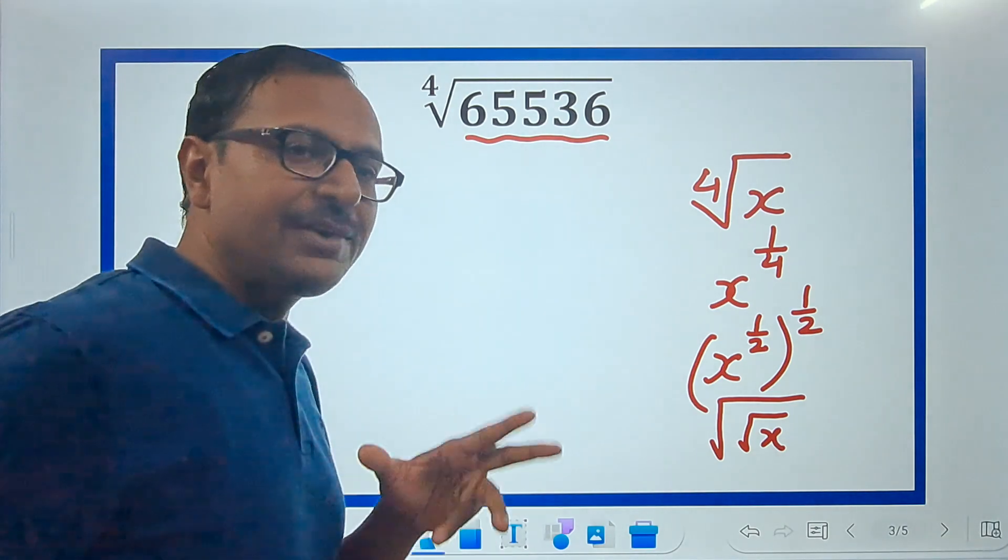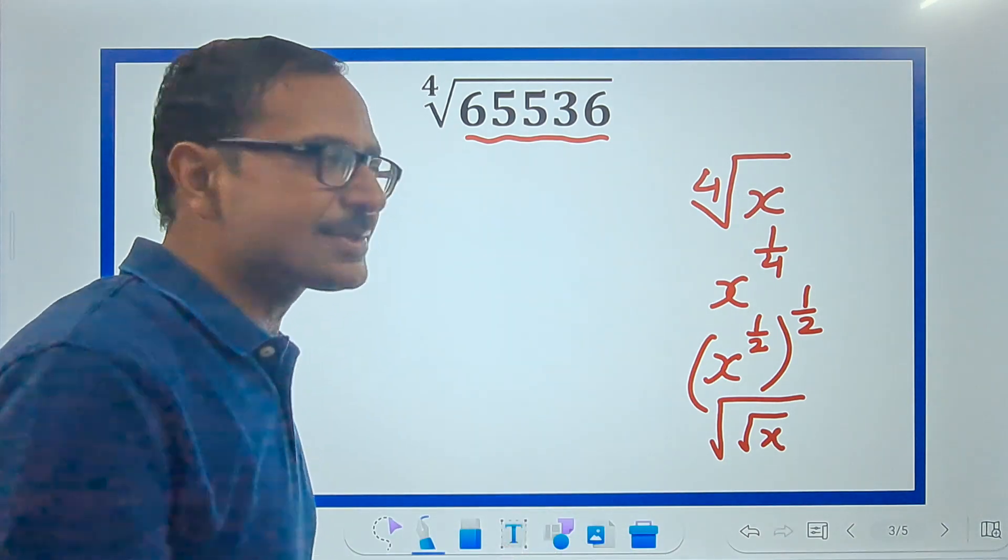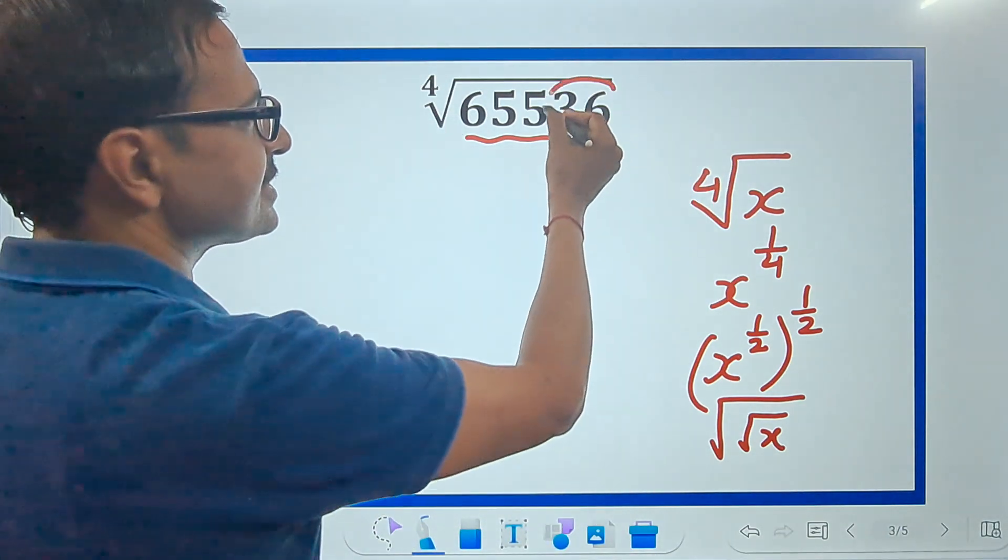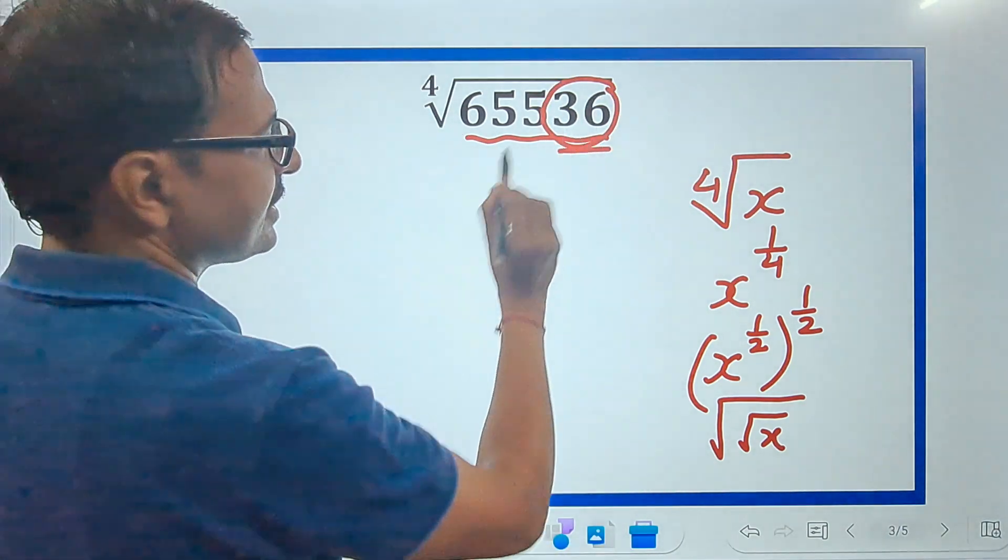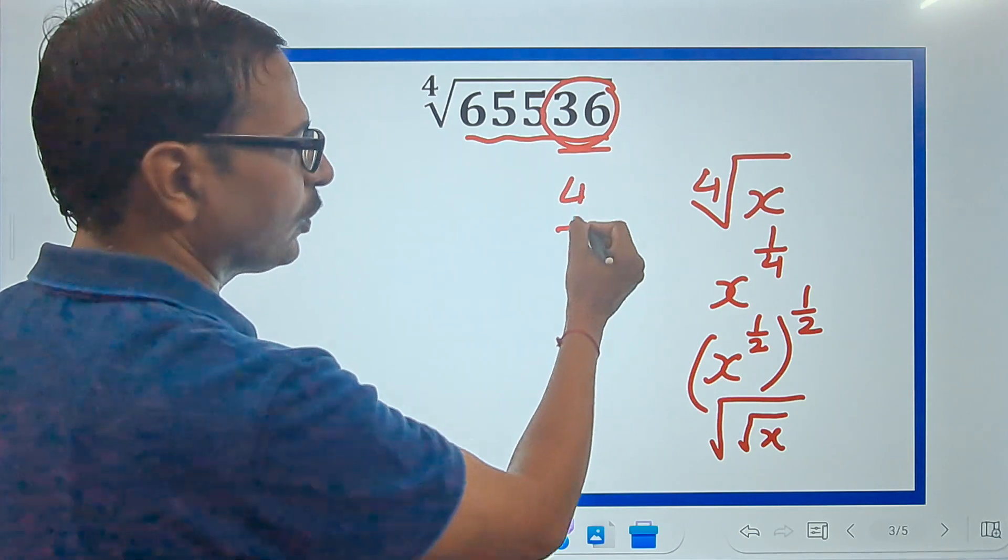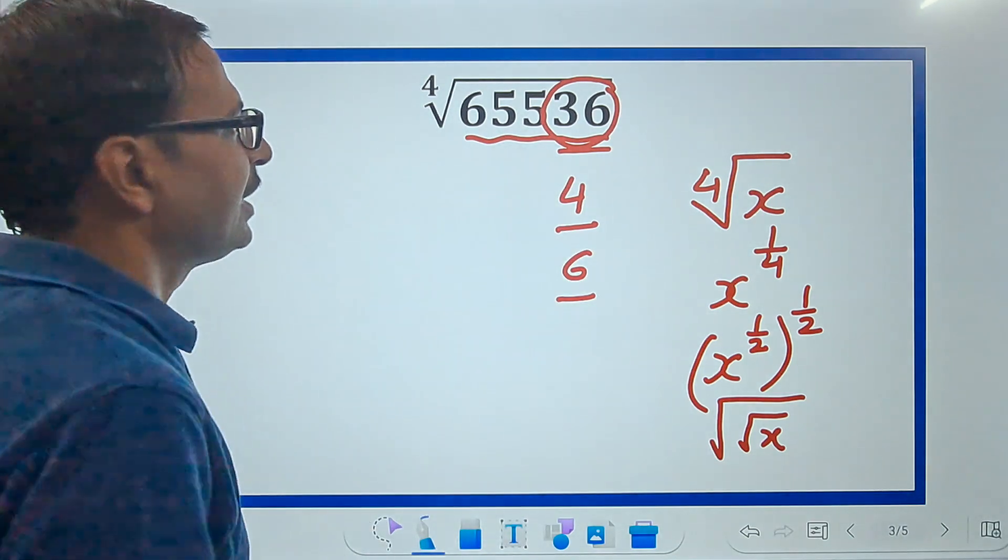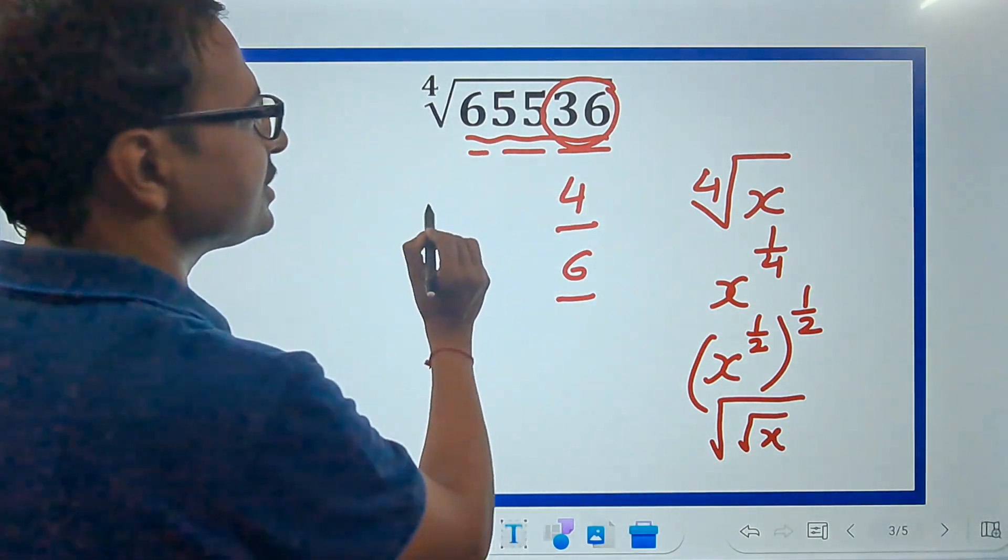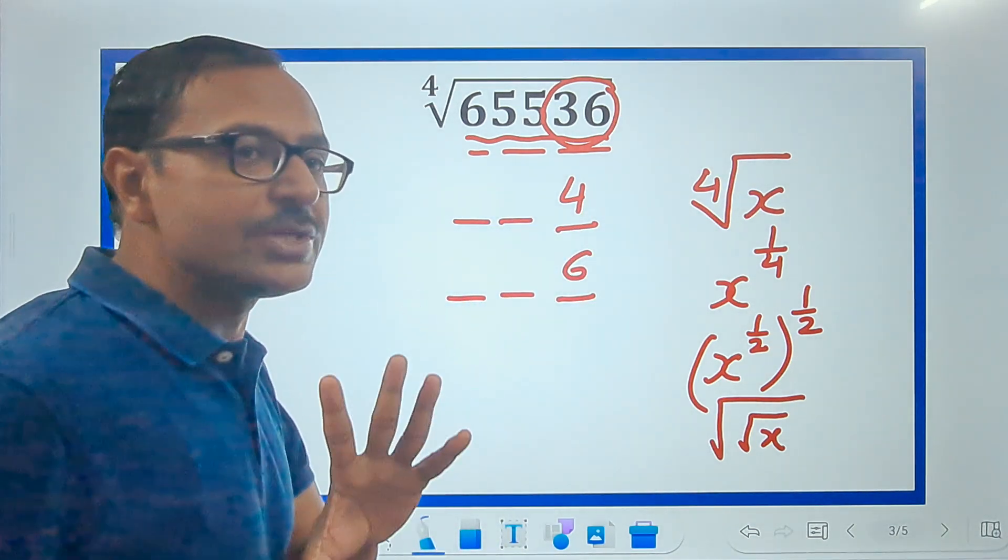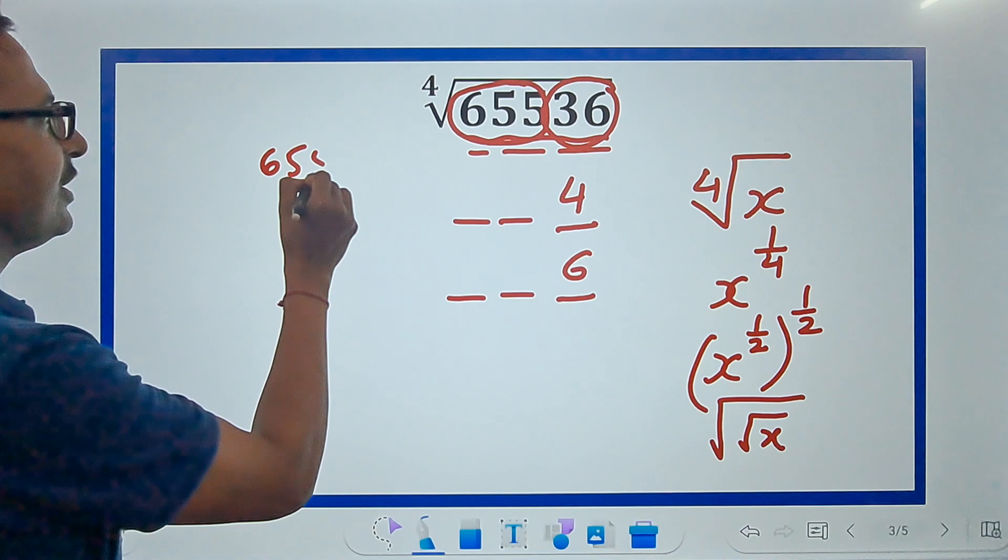We have to find the square root of this number 65536 two times, that will give you the fourth root. Here we have the pair of numbers from the right-hand side, this is 36. This 36 will tell you the unit digit of the square root of 65536, which is either 4 or 6, because 4 square ends in 6 and 6 square also ends in 6. Now we have another pair and a single digit, that means you will have two digits before 4 or before 6.